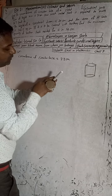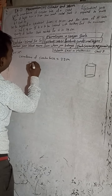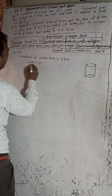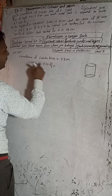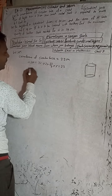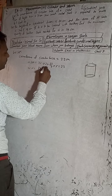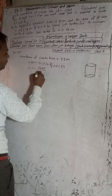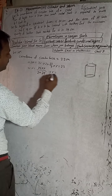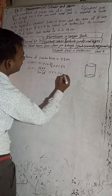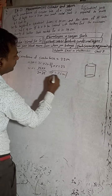The circumference of the circular base — circumference of the circle will be 2πr. So this implies: 2πr = 22. That means 2r × (22/7) = 22. Solving for r: r = 22 × 7 / (2 × 22) = 7/2, that means r = 3.5 cm.